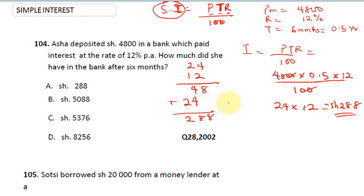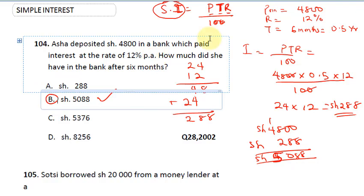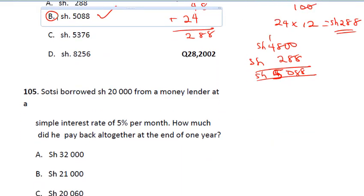The question asks how much she has in the bank after six months. So the total amount is her capital plus interest: 4,800 + 288. When you sum it up — 8+2=10, put 0 carry 1, giving 5,088 shillings. The correct answer is C. Several simple interest questions you'll face will take this dimension.